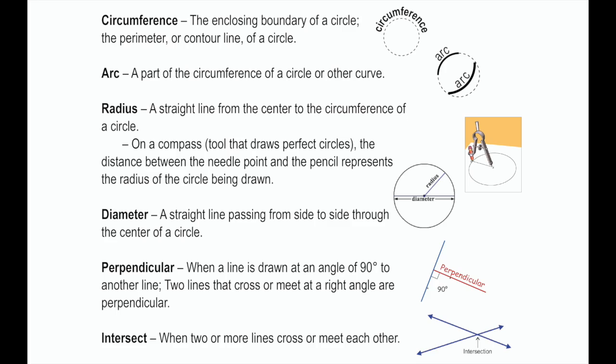Before we begin, we should go over some important vocabulary words. The circumference is the enclosing boundary of a circle or the perimeter. An arc is a part of a circumference or a part of a circle or other curve. The radius is the straight line from the center of a circle to its circumference.